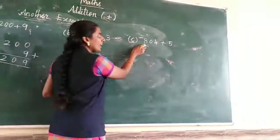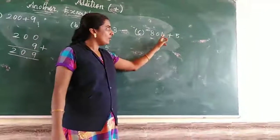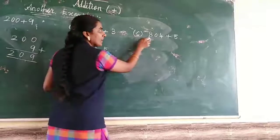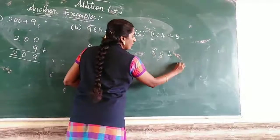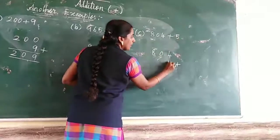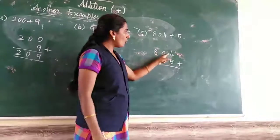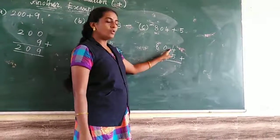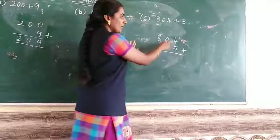Now problem C: 804 plus 5. Write it in column form. The ones place numbers are 4 and 5. Put 4 in your mind, 5 on your fingers.